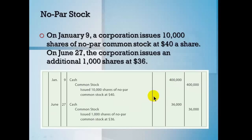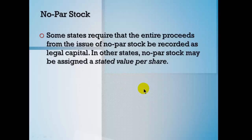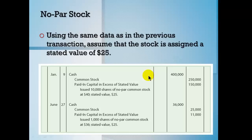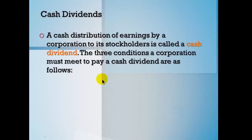For no-par stock, if you issue 10,000 shares at $40 a share and additional shares at $36, the entry is straightforward. Some states require that the entire proceeds from no-par stock be recorded as legal capital. If a stated value is assigned due to state requirement, you record that stated value to common stock and plug the difference. The debits always have to balance to the credits, so that last number is just a plug.